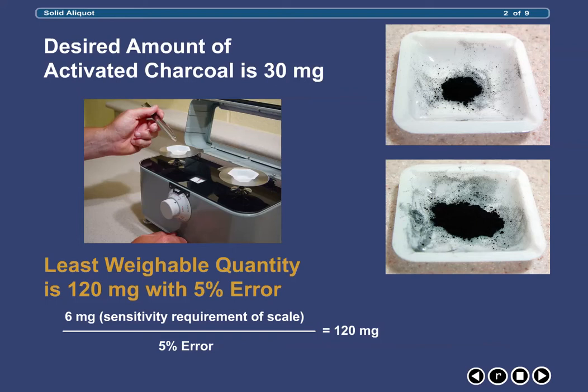How do we obtain 30 mg of activated charcoal when the smallest amount we can weigh on our balance is 120 mg? This is where solid aliquot calculations and procedures come into play.